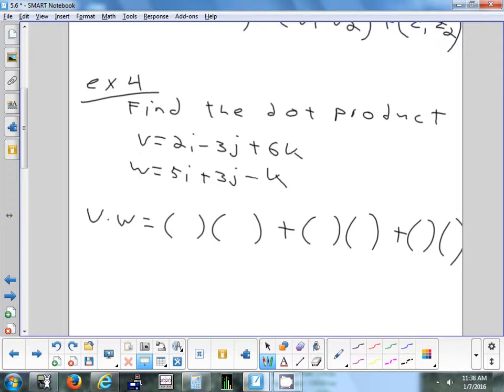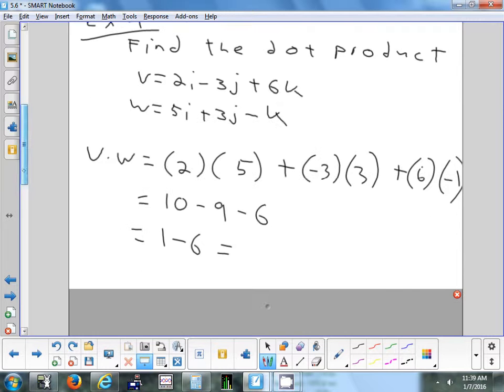All right. So let's take a look at our dot product. Paige, what are the first two things you multiply? 2 and 5. Yeah. 2 and 5. Next two things, Andy? Negative 3 and 3. Jess, do you think you know what the last two things are? 6 and negative 1. Good. 6 and negative 1. So my dot product is 10 minus 9 minus 6. 10 minus 9 gives me 1. And 1 minus 6. Negative 5. So there's my dot product. Any questions on the dot product?